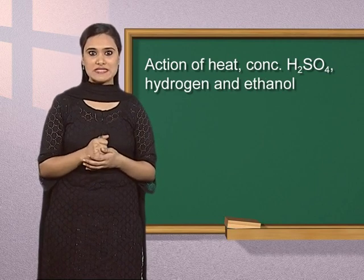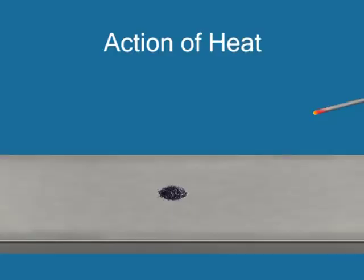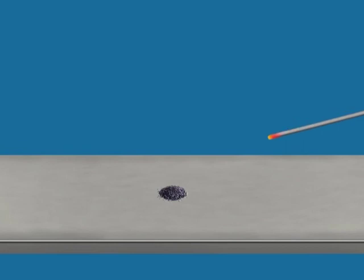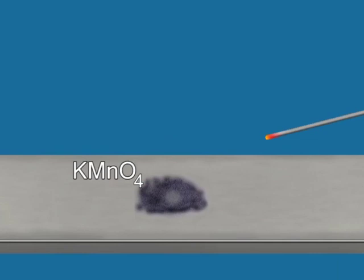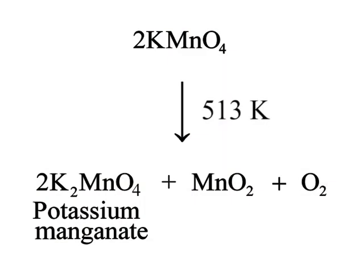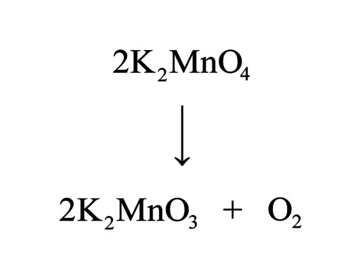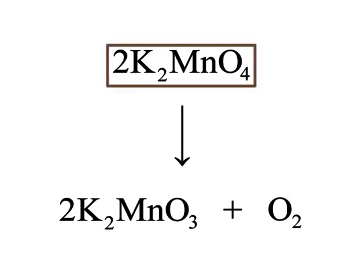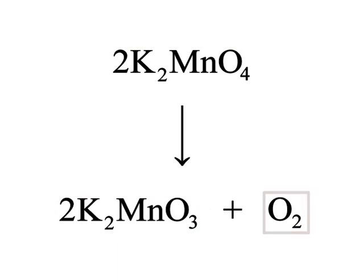First, we will see what happens when potassium permanganate is heated. Action of heat: when potassium permanganate is heated to 513 Kelvin, it readily decomposes to give potassium manganate, manganese dioxide and oxygen gas. On further heating, this potassium manganate again decomposes to potassium manganate and oxygen gas is released.